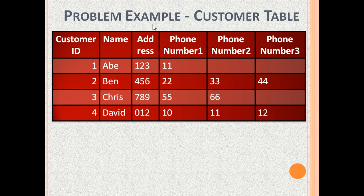Another problem example: this is the customer table. Its columns are customer ID, name, address, phone number 1, phone number 2, and phone number 3. The problem is repeating values of phone numbers. This gives rise to issues — for example, Abe has only one phone number, so the space for phone number 2 and phone number 3 is wasted. Also, David has four phone numbers, but we can store a maximum of three phone numbers only.